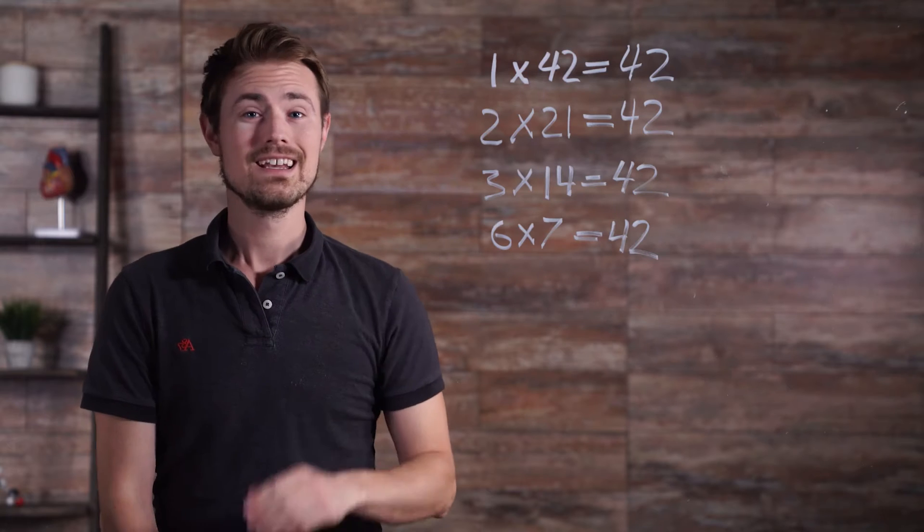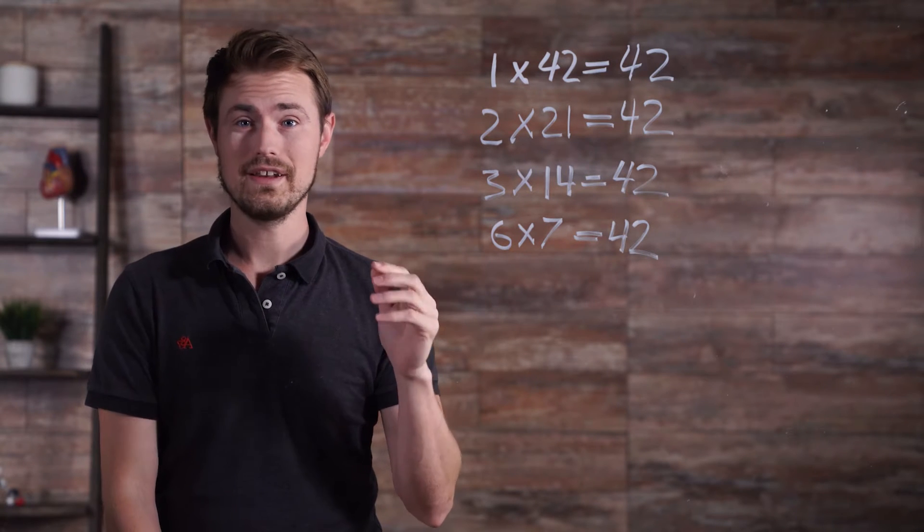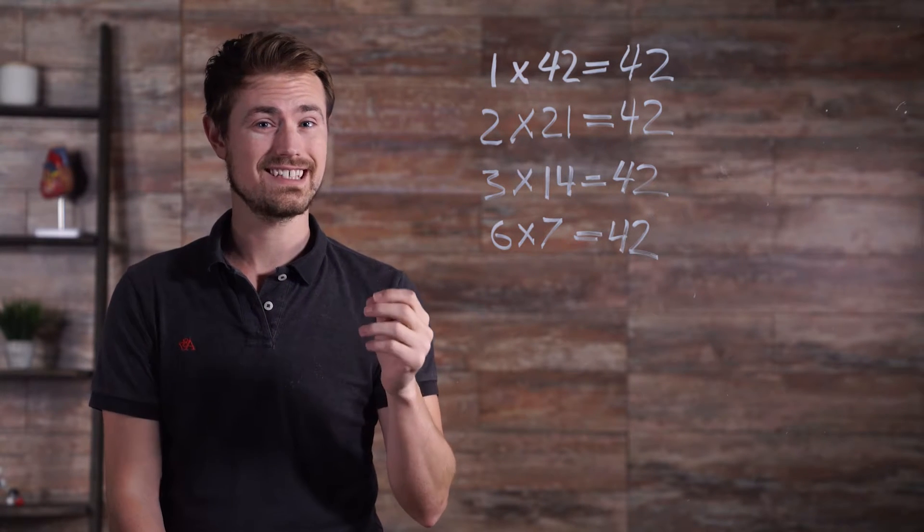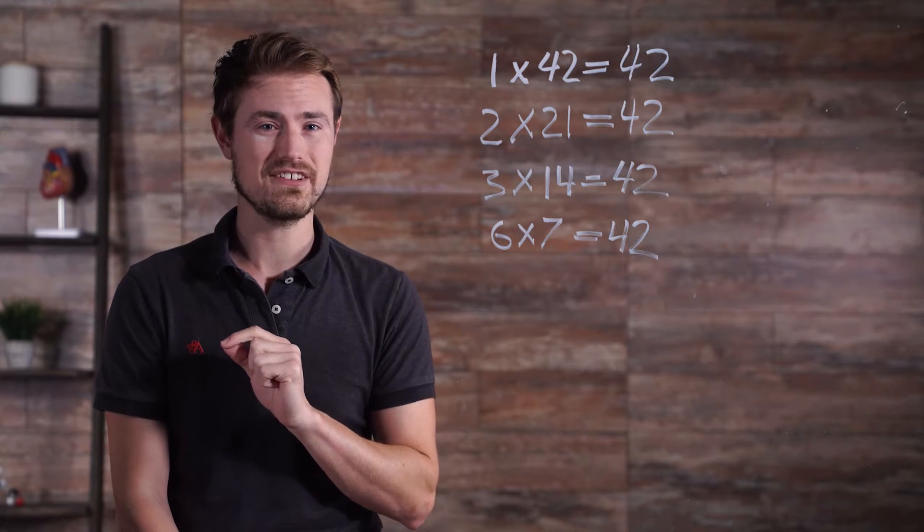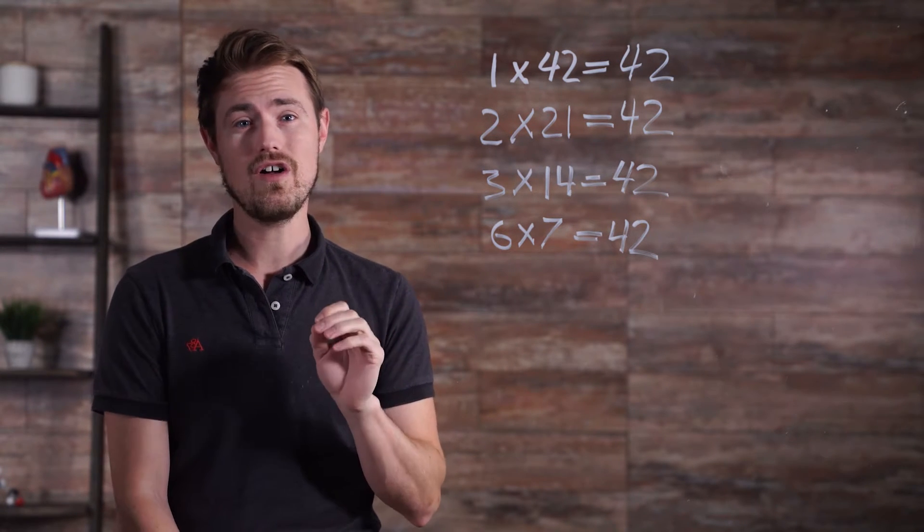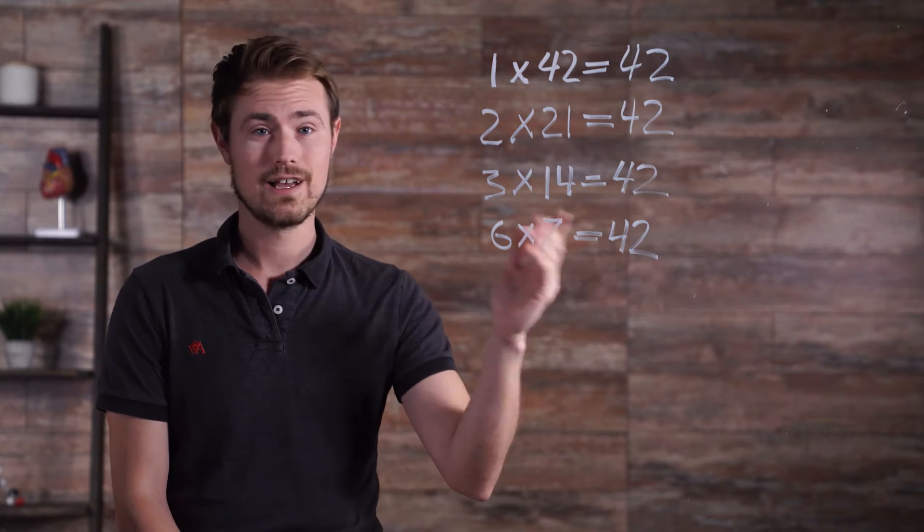Let's see what else we have. Since all of these numbers 1, 2, 3, 6, 7, 14, 21, and 42 can be multiplied together to get 42, they are all considered factors of 42.